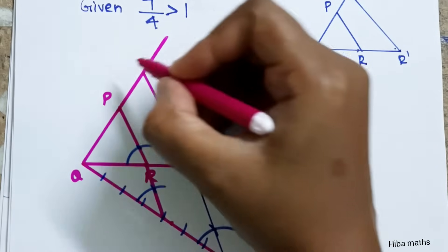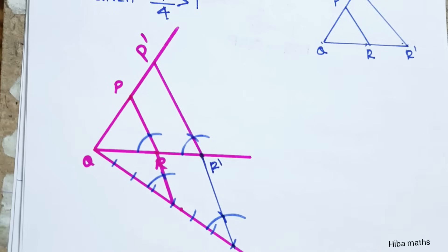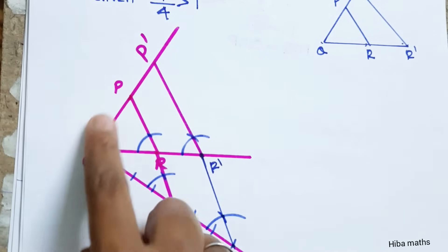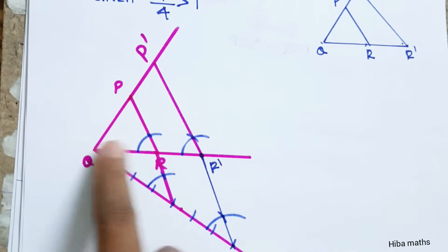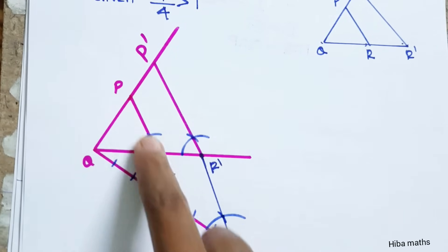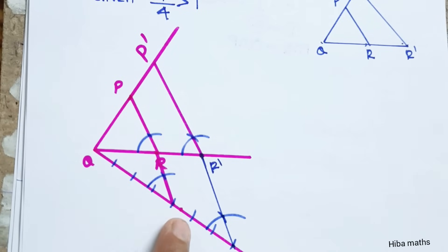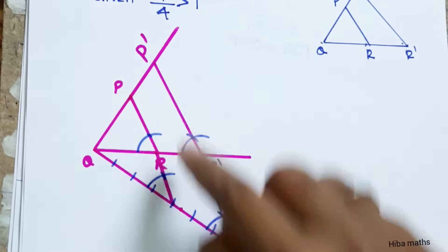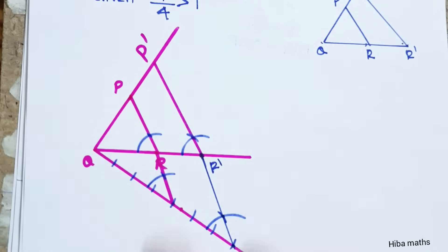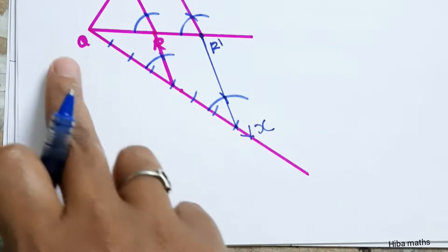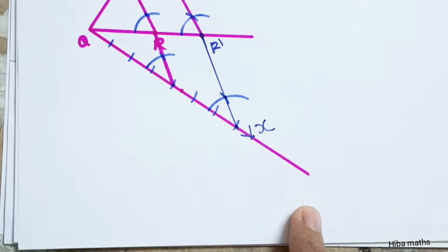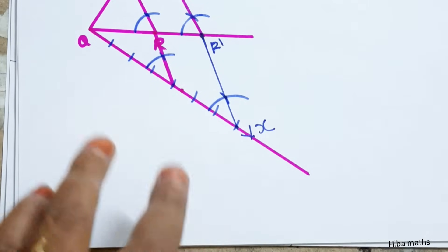This is B'. This is the 7th part: 1, 2, 3, 4, 5, 6, 7. And this is the 4th part. In the diagram, this is X. This is the construction.